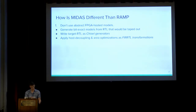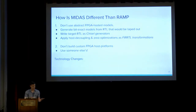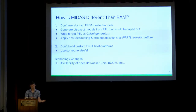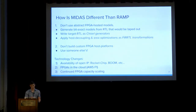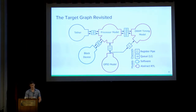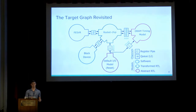The second big difference: we're not going to build custom FPGA host platforms; we're going to use FPGAs in the cloud. Over the past 12 years we've benefited from key technology changes. We have more open IP around RISC-V — we can take Rocket Chip and BOOM and build models from them automatically. We have very large FPGAs in the cloud through AWS F1, and 12 years of continued FPGA capacity scaling means we don't need the same level of optimization. In the MIDAS universe we replace the processor model with one generated from Rocket Chip RTL.